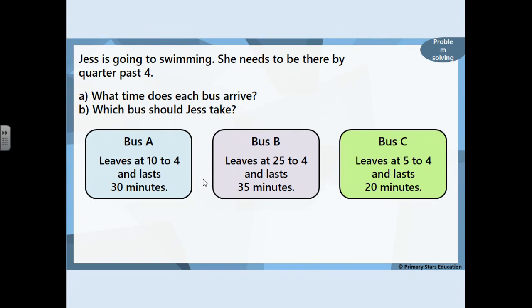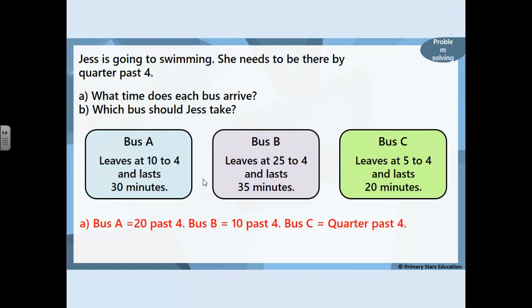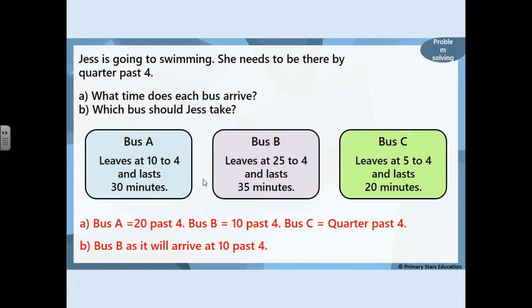Bus A arrives at 20 past 4. Bus B arrives at 10 past 4. Bus C arrives at 10 past 4. Which bus should Jess take? She should take Bus B, which arrives at 10 past 4, because she needs to be there by quarter past 4. Bus B is the best option — well done if you got that!